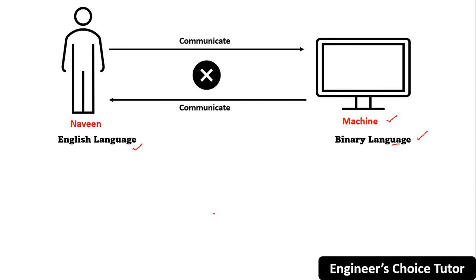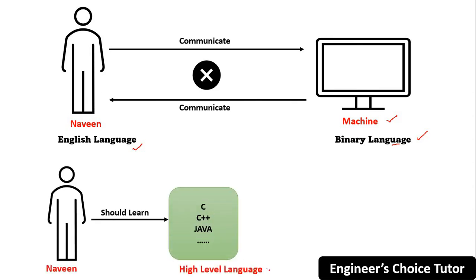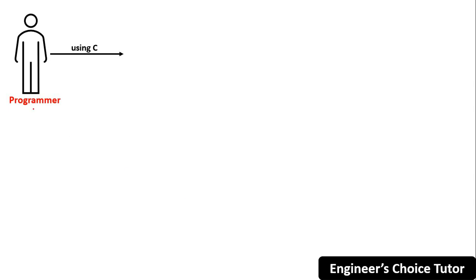Before going to the translation concept, Naveen should learn any one of the high-level languages like C, C++, or Java in order to communicate with the machine. Suppose Naveen learned C programming language — that is why Naveen becomes a programmer, because he knows C. Now Naveen wants to pass two numbers and wants the sum of those two numbers as output.